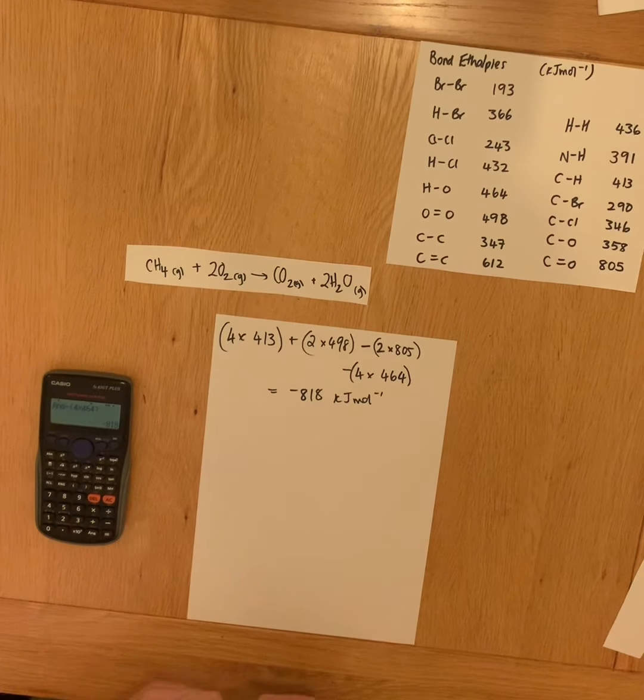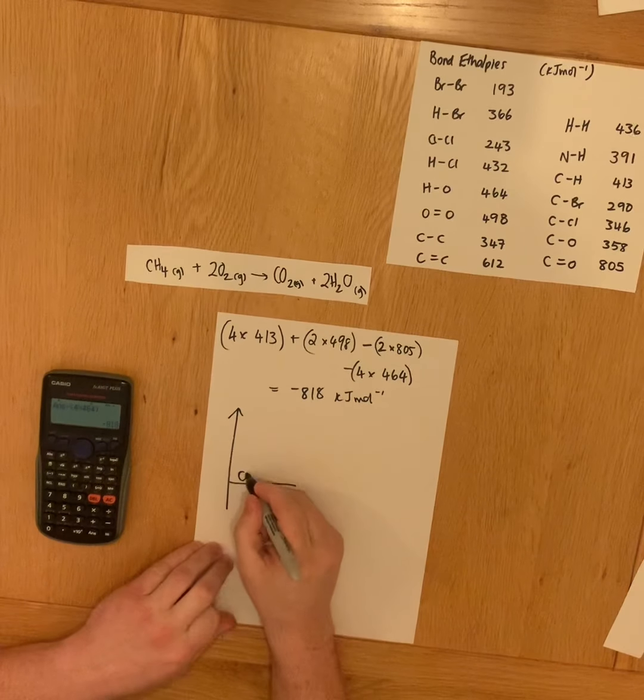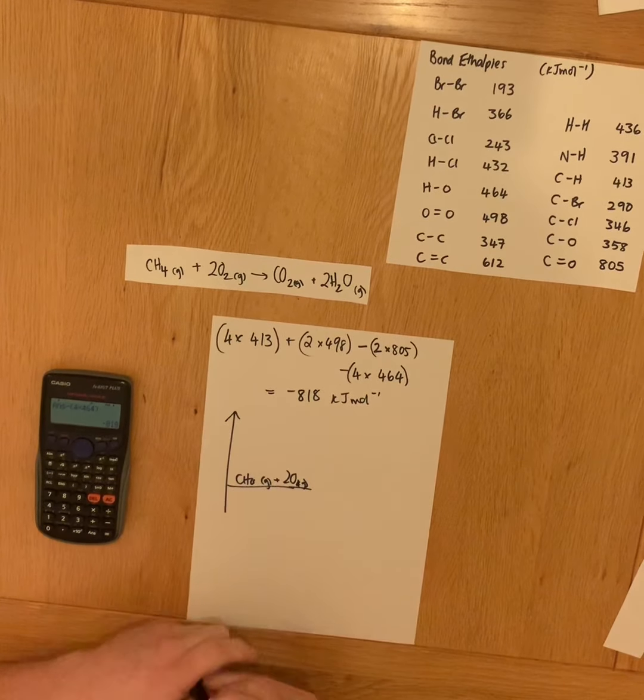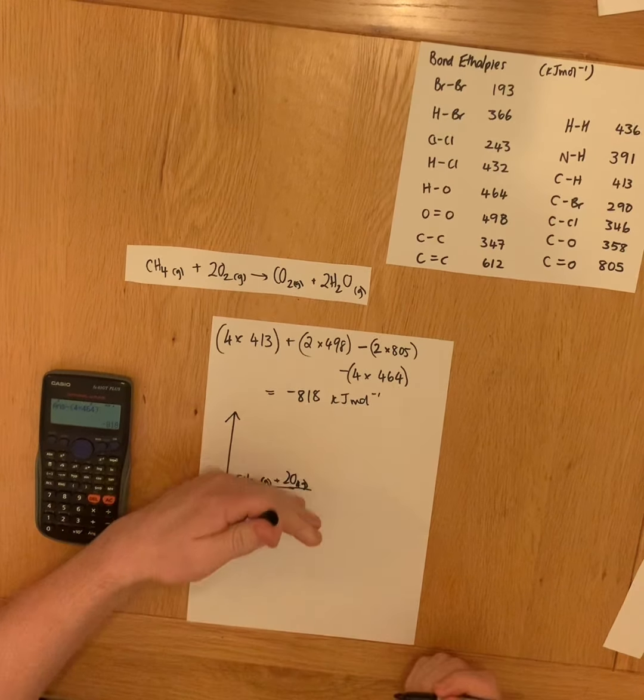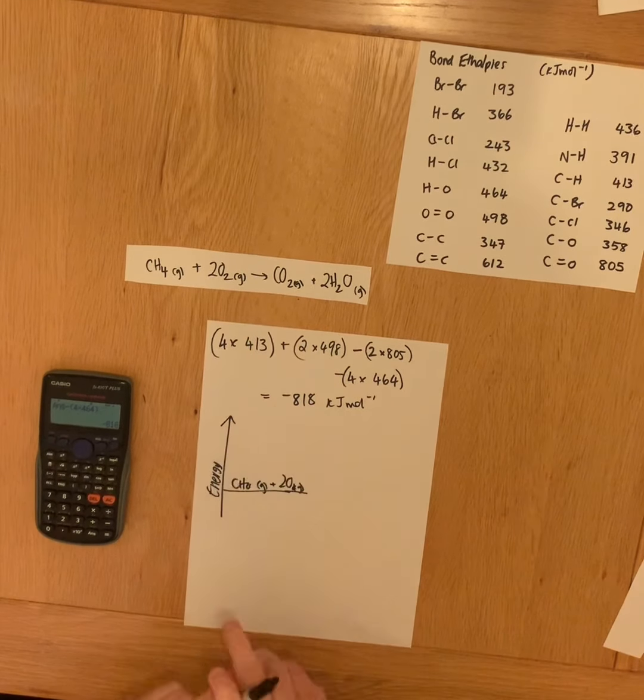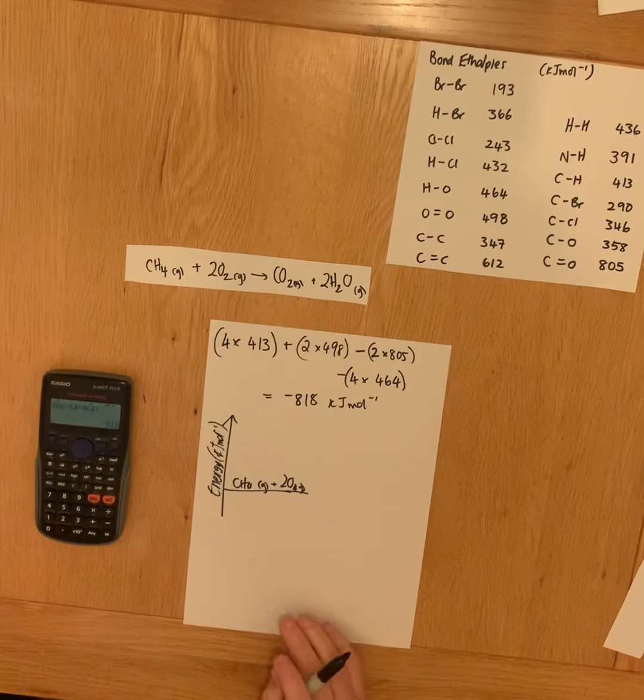And we know therefore the energy of our reactants, methane and oxygen, the energy of our reactants is higher. The energy or enthalpy that is stored within our reactants, that chemical potential energy stored in the bonds,